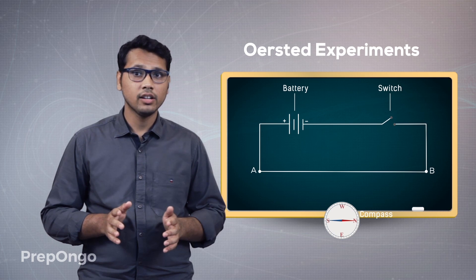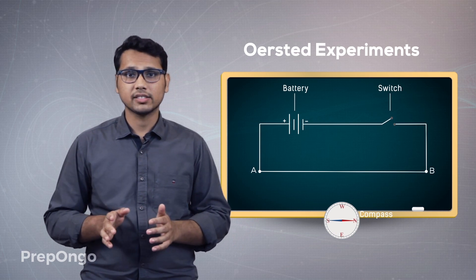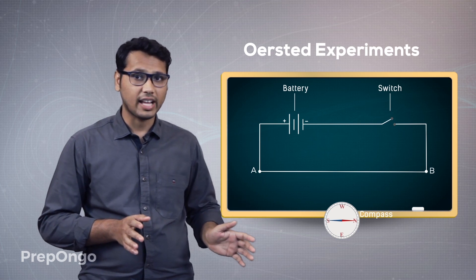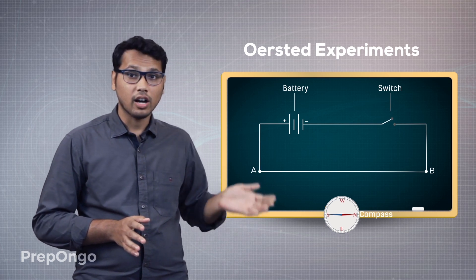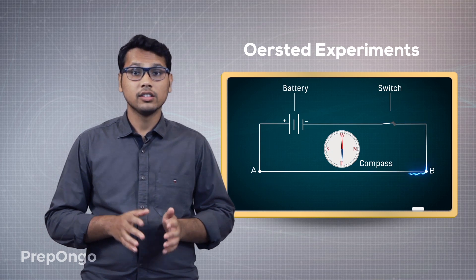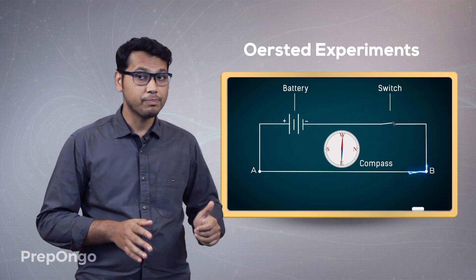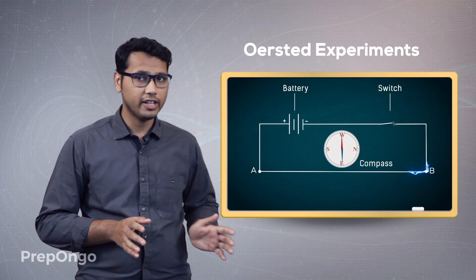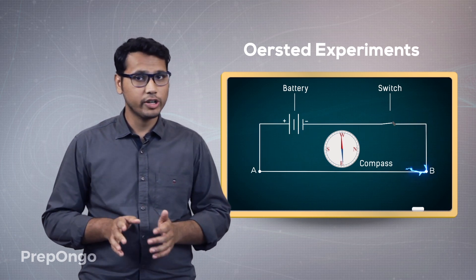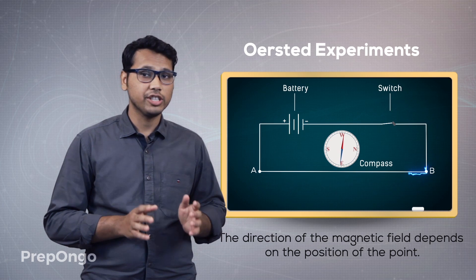Next, he had to find out whether the direction of the magnetic field produced by the electric current also depends on the position of the point. He took the compass, placed it above the wire, and when he switched on the battery, he found that the magnetic needle now deflected in the upward direction. Previously it deflected downward, but now it deflected upward. He concluded that the direction of magnetic field also depends on the position of the point.